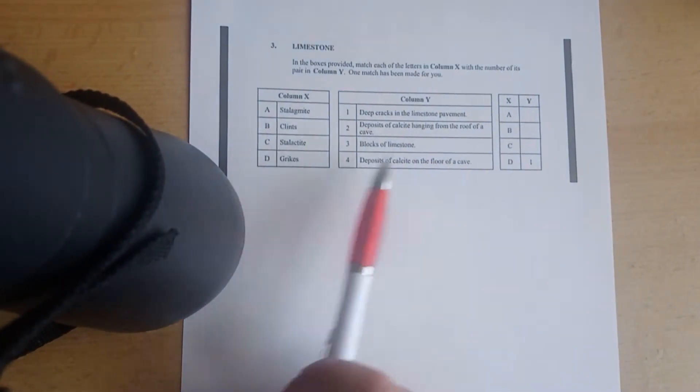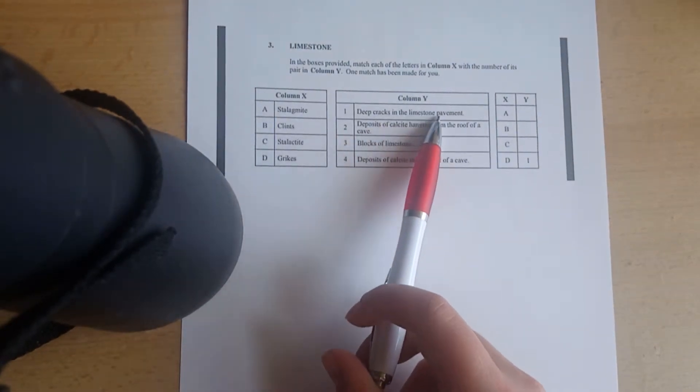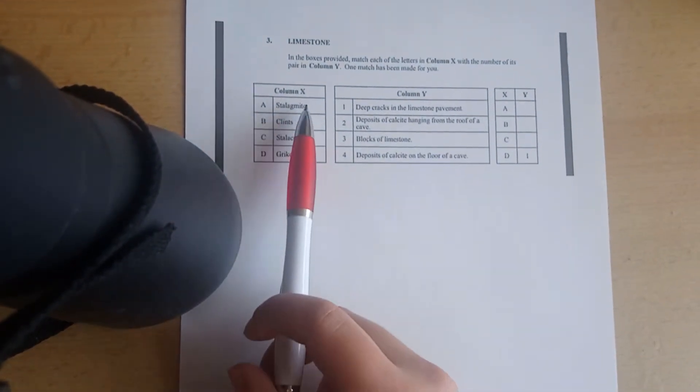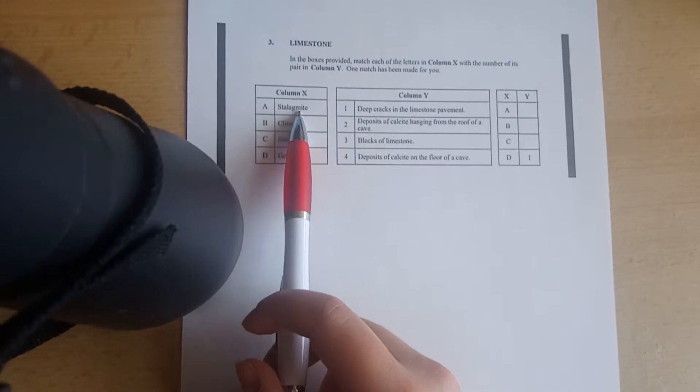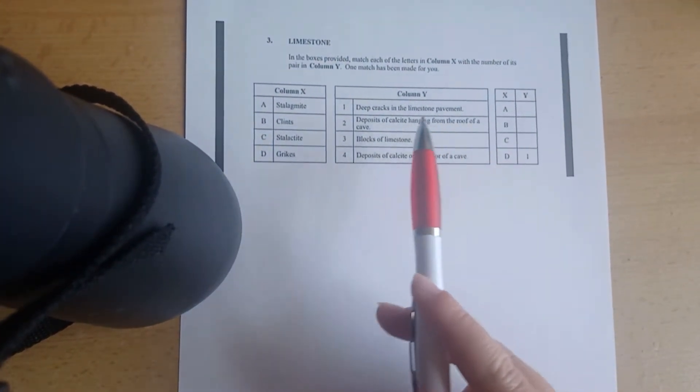What we have is D and one, so grikes are deep cracks in the limestone pavement. Next we'll go with A: stalagmite. Deposits of calcite hanging from the roof of a cave? No. Blocks of limestone? No. Deposits of calcite on the floor of the cave? Yes.